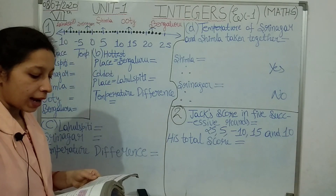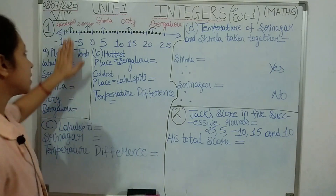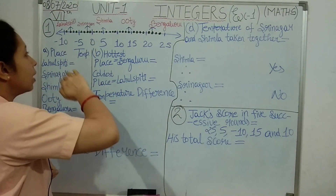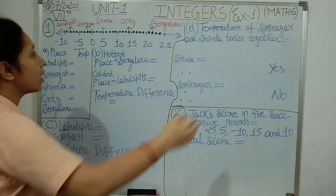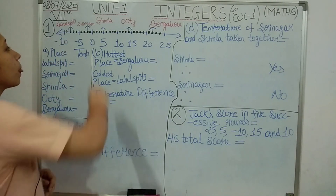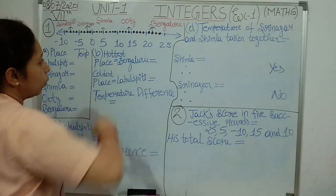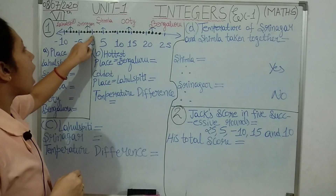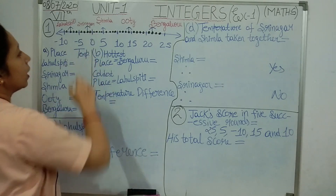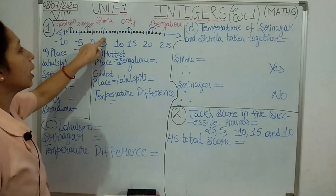We have to observe the number line and write the temperature of the places marked on it. We will start from 0. From 0 to the right hand side, all the positive integers are there, and to the left hand side all the negative integers are there. Between 0 to 5 equal distance, 5 to 10 again equal distance, 10 to 15 equal distance. After 0 it is integer 1, then 2, 3, 4, 5.